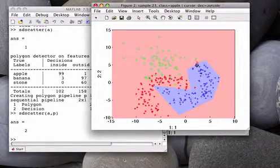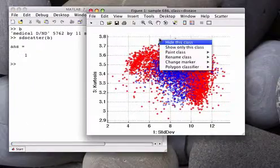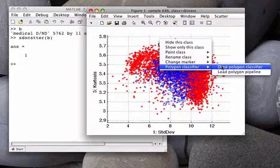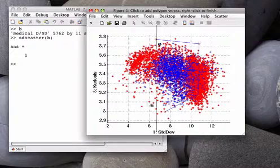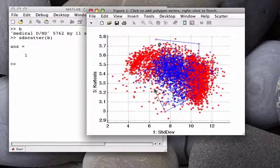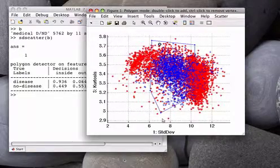The polygon is drawn using two features, but works also for n-dimensional datasets. This medical dataset, for example, has 11 features. The polygon classifier stores which two features are employed. Also note that the polygon is applied to current subset of data in your scatter plot.